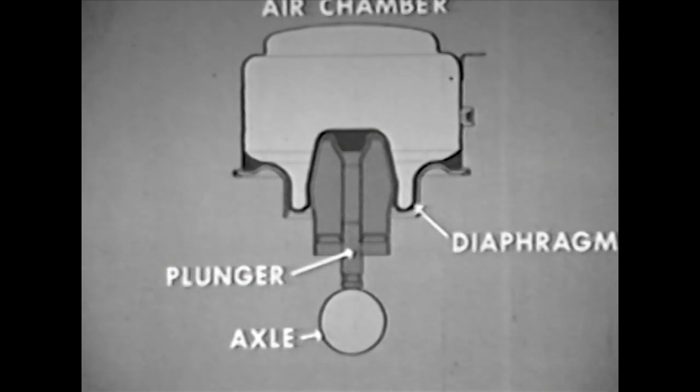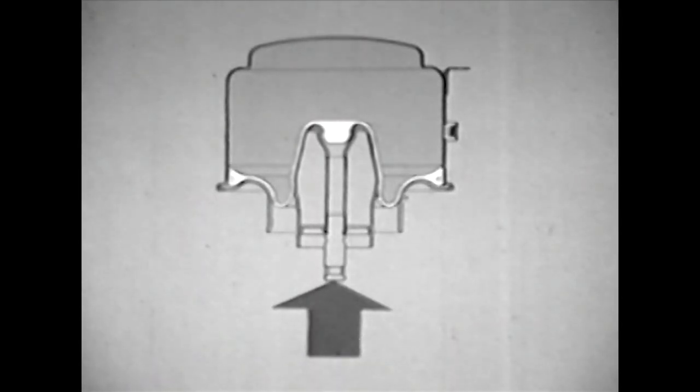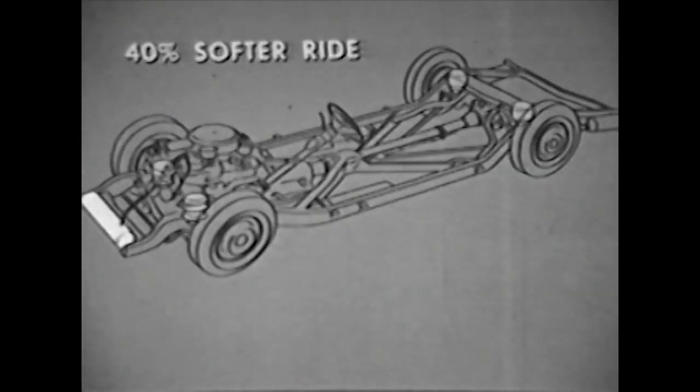The bottom end of a metal plunger or piston is attached to the axle. On its top end rests the diaphragm of the air chamber, attached to the frame. When the wheel strikes a bump, the plunger moves up, forcing the diaphragm into the air chamber where the compressed air in the chamber smothers the road shock. Consequently, Buick passengers literally ride on air.